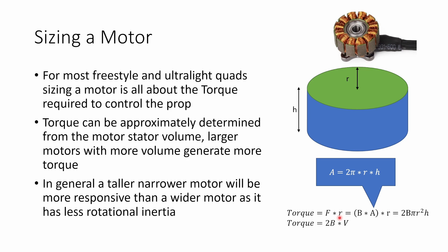In general, a taller narrower motor is going to be more responsive than a wider motor. As you make the motor wider, you do increase the amount of torque because this r value gets bigger, but you also increase the moment of inertia of the motor. If you make the motor taller, you also increase the torque but you don't increase the moment of inertia by the same amount. So a taller and narrower motor has a better ratio of torque to moment of inertia than a wider motor. In general, these taller and narrow motors are more responsive and better for these freestyle and ultralight applications.